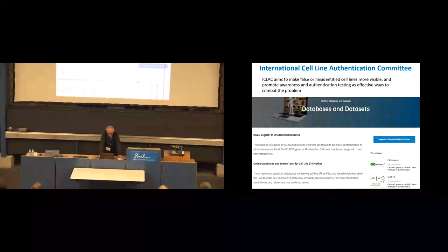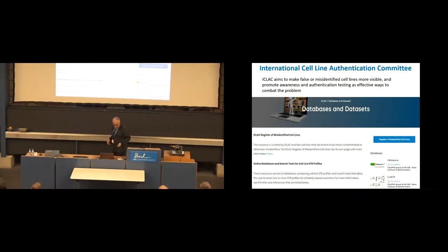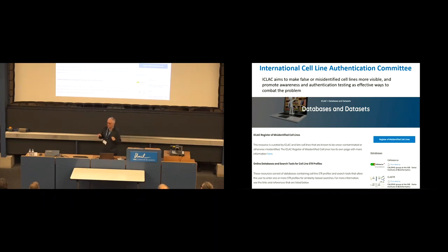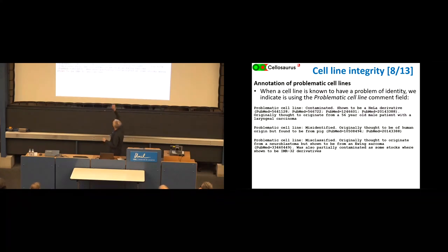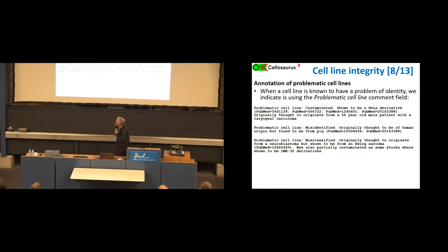Fortunately, work started a number of years ago by scientists working pro bono - none of them paid to do this - who are passionate about getting cell lines correct. They created the International Cell Line Authentication Committee (ICLAC), and we have here both the first chairman and the current chairman - Amanda and Anita. They provide a list of misidentified cell lines: a registry. Cellosaurus uses this information and flags problematic cell lines. If a cell line in Cellosaurus is known to have a problem, you will see it in big red letters showing it's problematic.